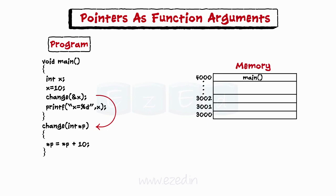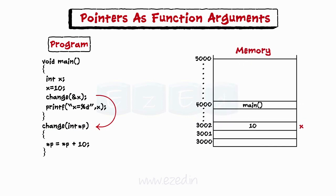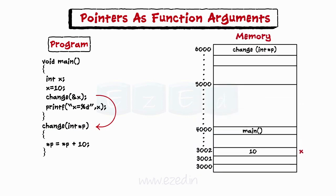Let us say, main function is using the memory addresses from 3000 to 4000. x is a local variable of the main function. x is stored at memory location 3002 and value of x is 10. When main function is executed, function change is called and a pointer variable p is passed to change function. Let us say, the change function utilizes the stack frame from 5000 to 6000. Now p is the local variable of function change. It points to x and stores the address of x. In the statement, asterisk p equals asterisk p plus 10.